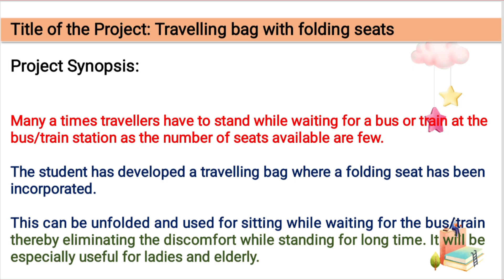The title of the project is: 'Traveling Bag with Folding Seat.' This completely describes that the project involves making a bag with a folding seat attached to it. Now, for how to write the project synopsis, as you can see I have written three paragraphs — the first paragraph describes the problem, the second describes what my project is, and the third describes how my project solves the problem.